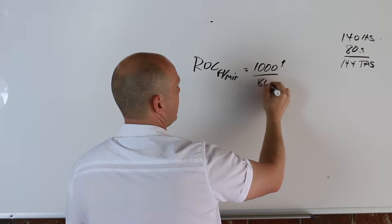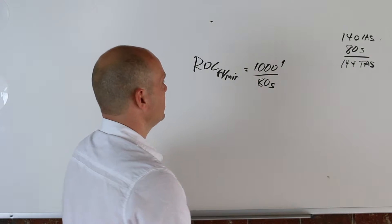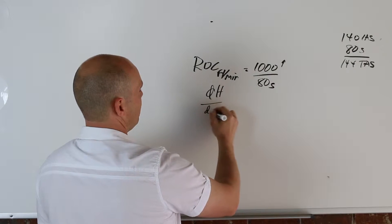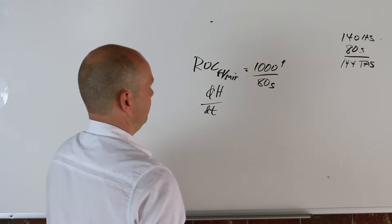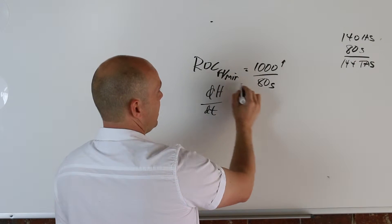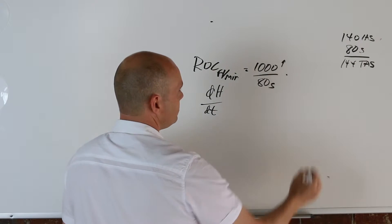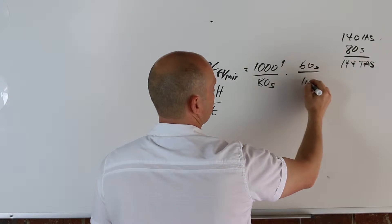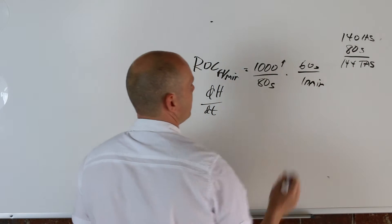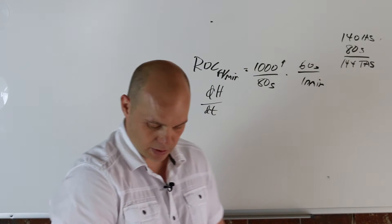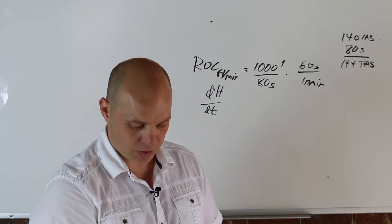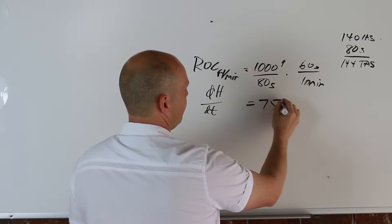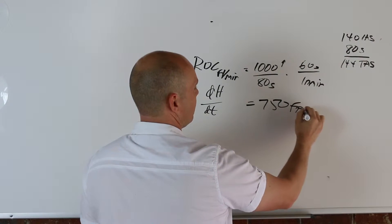So that's that derivative of height over derivative of time, height over time. But we need to convert this in feet per minute, so 60 seconds in one minute. So you do the math, and that works out to be 750 feet per minute.